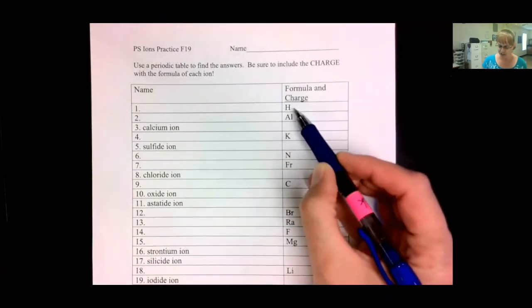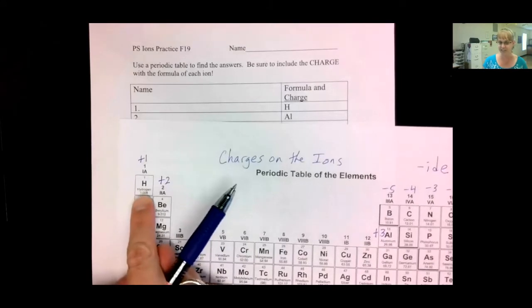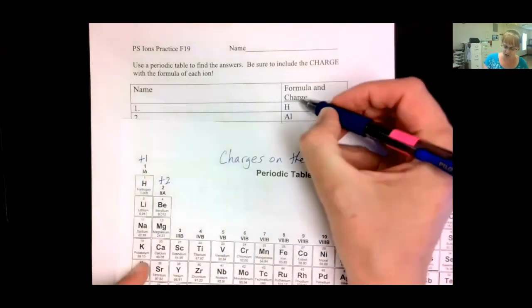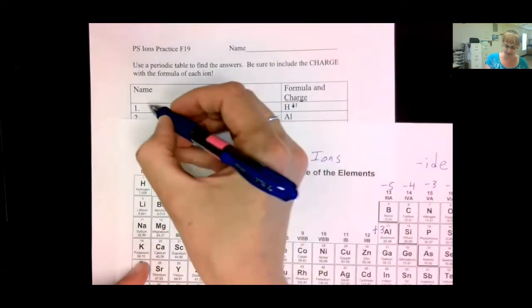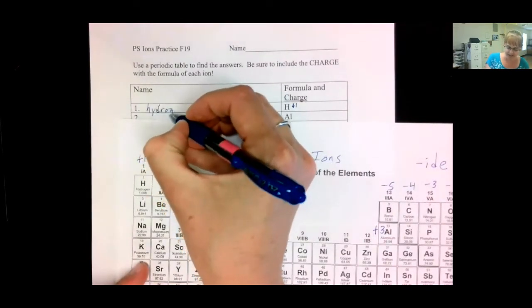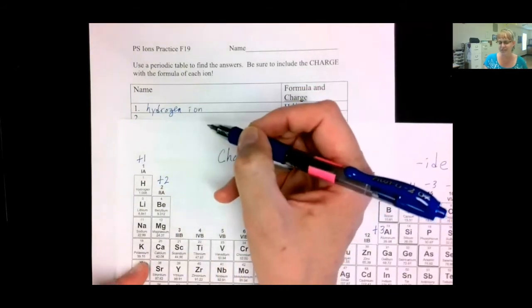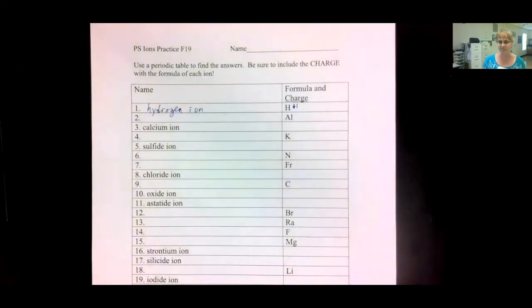So, first of all, H. What charge would hydrogen get? You have to find it on the periodic table. And it is a positive one charge. So, H plus one. Then we need to name it. Hydrogen. We don't change the name. We just leave it hydrogen ion. After you write the word ion once or twice, you can give up and quit writing it. We'll just assume that the word ion is on every one of these.